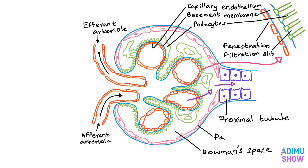There are two layers in the renal corpuscle: the visceral layer and the parietal layer. Podocytes and pedicles make up the visceral layer. The space between these two layers is the Bowman's space.